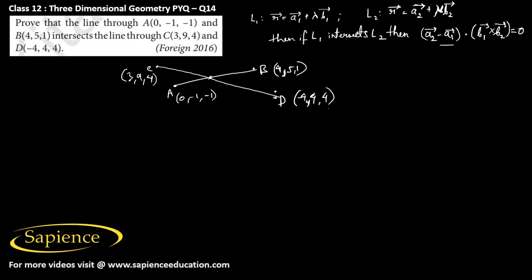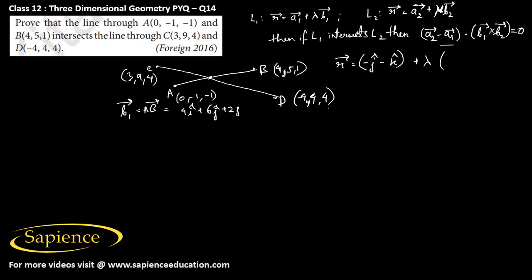First we need to find the equation of line AB. We write r vector equals 0i cap minus j cap minus k cap, plus lambda times b1 vector. The vector AB will be 4i cap plus 6j cap plus 2k cap.